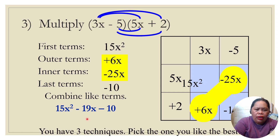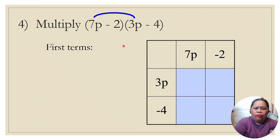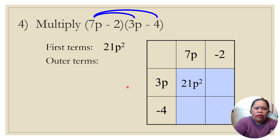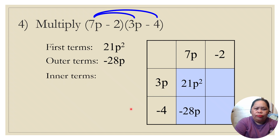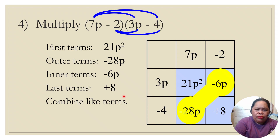You have three techniques — pick the one you like best. Now let's try: multiply (7p − 2) times (3p − 4). Using the box method: First terms — 7p times 3p is 21p squared. Outer terms — 7p times −4 is −28p. Inner terms — −2 times 3p is −6p. Last term — −2 times −4 is positive 8. Combining like terms: 21p squared minus 34p plus 8.